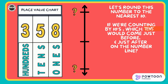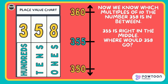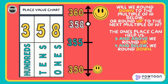Let's round this number to the nearest 10. If we're counting by tens, which 10 would come just before and just after on the number line? Pause the video and discuss this with your partner. Now we know which multiples of 10 the number 358 is in between. 350 is below and 360 is above. We see 355 right in the middle. Where would 358 go? Point it out on the number line. We see 350 down below and 360 up above. The ones place can help us — 5 and above, we round up; 4 and below, we round down. I'm looking in the ones place of 358 and I see an 8. That's 5 and above. So I know 358 rounded to the nearest 10 is 360.